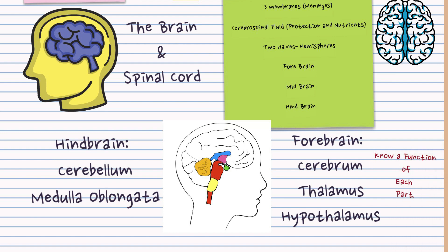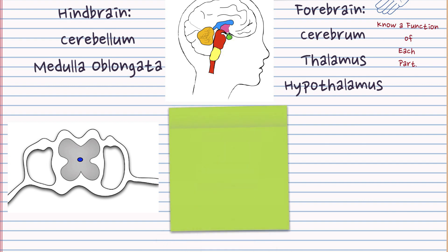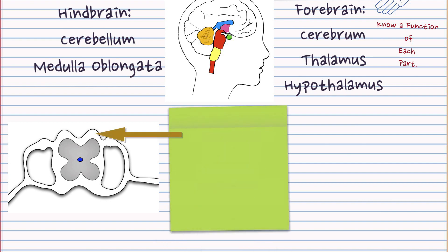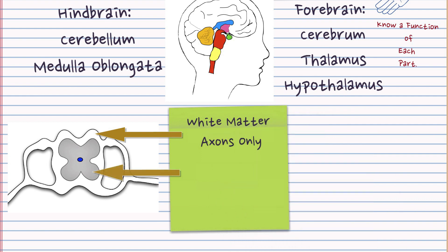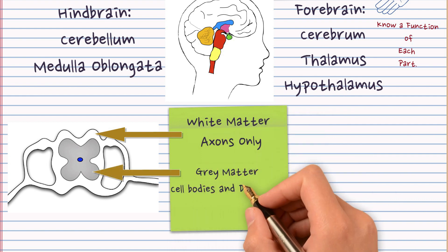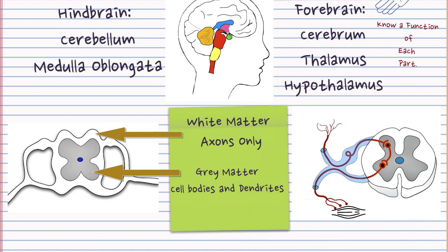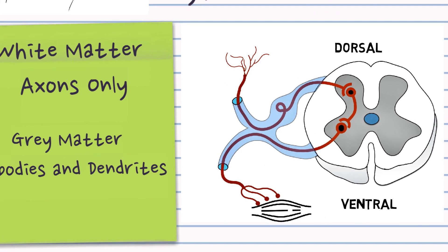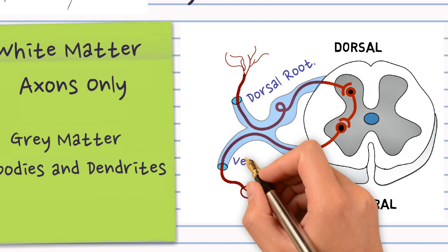Next it's the spinal cord so be able to draw this and label it pretty well. So it's made up of white matter which is axons only and it's also made up of grey matter here in the center in an H shape and it's made up of cell bodies and dendrites only. When we examine diagrams of the spinal cord dorsal means back and ventral means front. The sensory neurons enter in through the dorsal root and it has a swelling and the motor neurons exit through the ventral root towards some muscle.